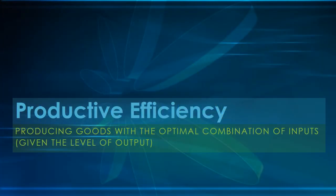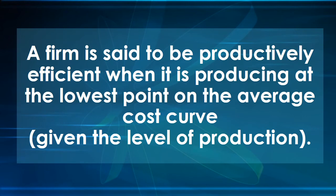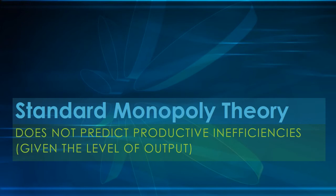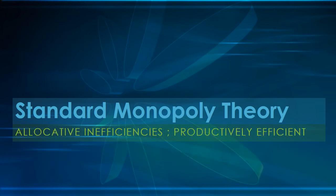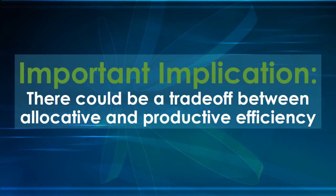Let's turn now to productive efficiency. With productive efficiency, we're producing goods with the optimal combination of inputs — in general equilibrium terms, this is called input efficiency. A firm is productively efficient when it is producing at the lowest point on the average total cost curve. Standard monopoly theory does not suggest we use a mix of inputs that is inefficient; it does not predict productive inefficiencies. So while standard monopoly theory predicts allocative inefficiencies, it does not predict productive inefficiencies — we will produce at our lowest costs, we just might not produce the right quantity to allocate society's resources optimally.